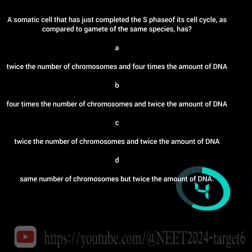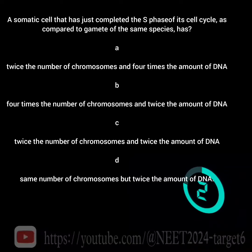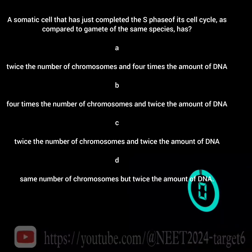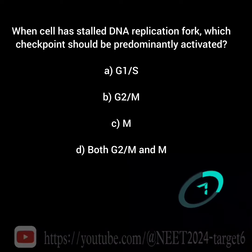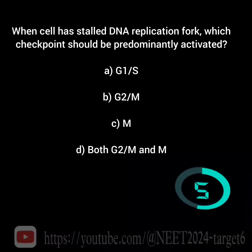A somatic cell that has just completed the S phase of its cell cycle — as compared to a gamete of the same species, what does it have? When a cell has a stalled DNA replication fork, which checkpoint should be predominantly activated?